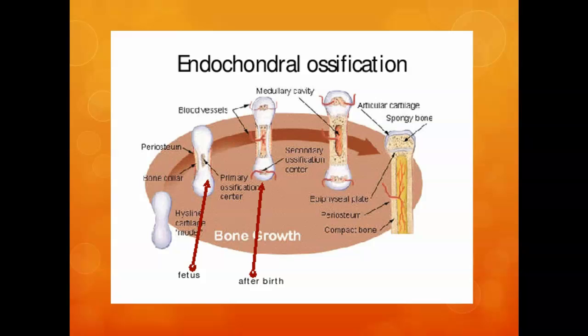As blood moves in, those cells grow faster, lengthening the bone. They then die, the cartilage is removed, and bone replaces it — you need a good blood supply for that. At birth, most long bones are bony, though the ends of the bones are still cartilage. Blood vessels then move into the distal and proximal ends, and the same process takes place there.